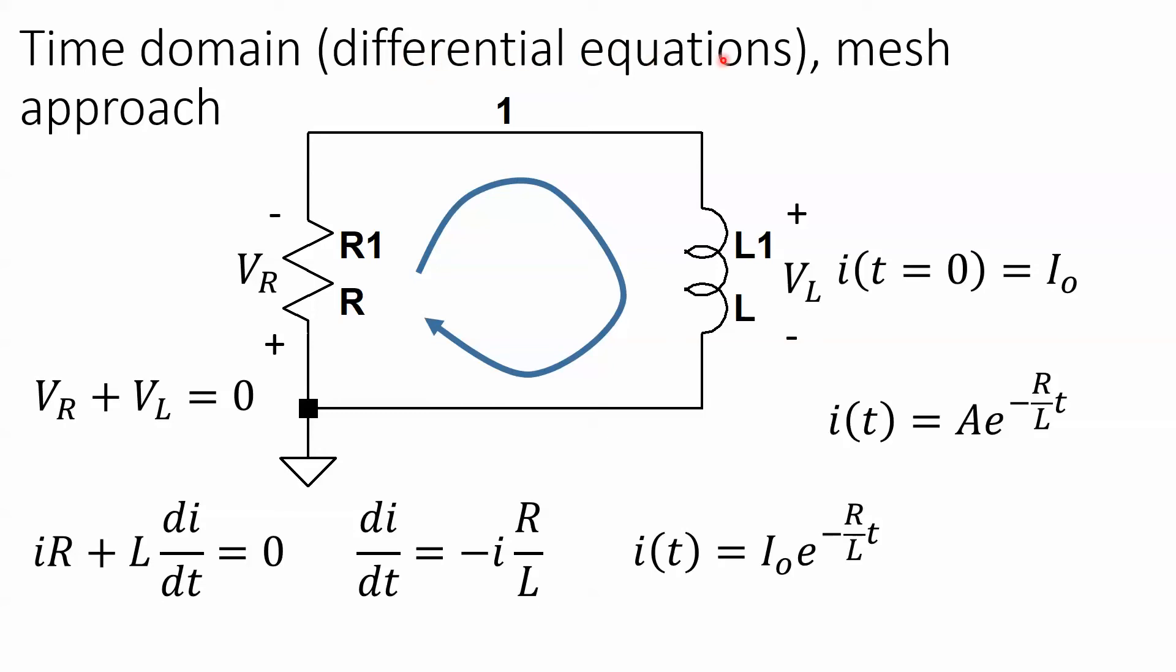There's the mesh and the nodal approach, so let's just start with the mesh. There's one current, the current is going in this direction so that we get a plus minus drop and then we get a plus minus drop. So the mesh method, we sum the voltages and they should equal zero, which we do.